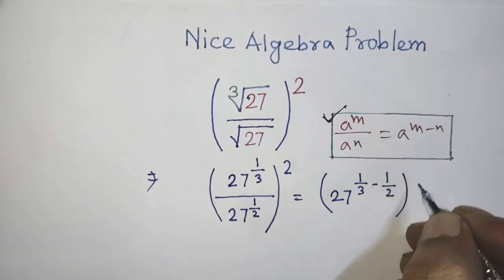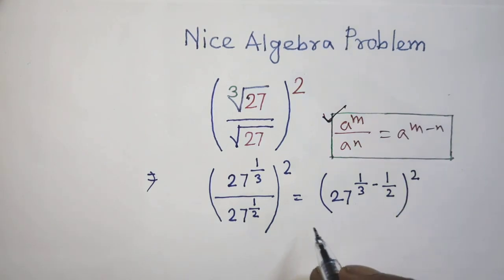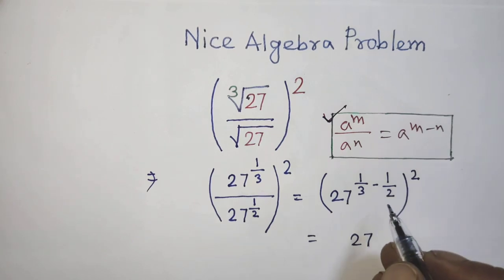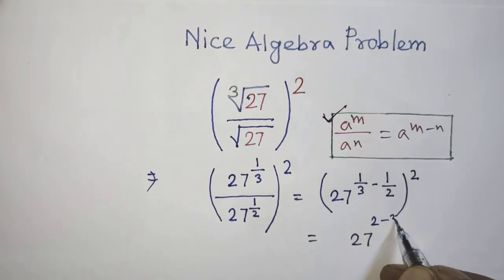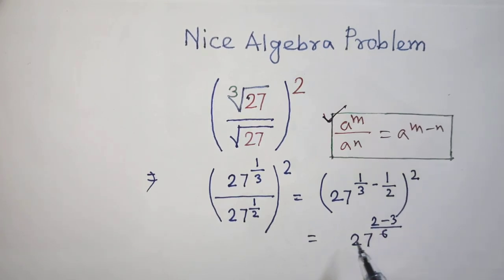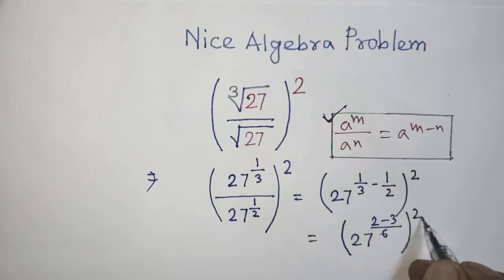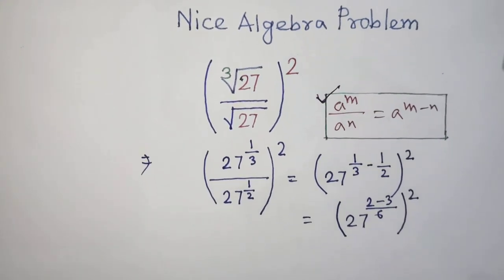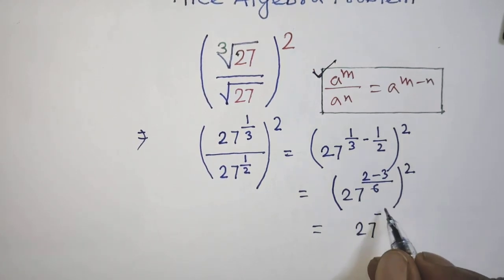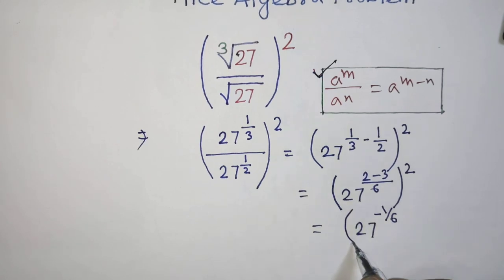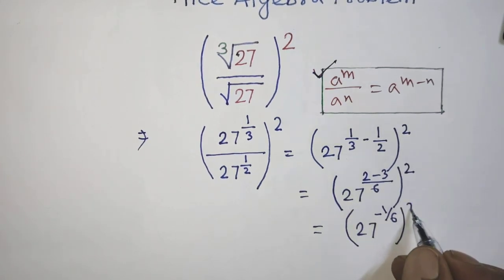Then it will be 27 to the power (2 minus 3) over 6, whole to the power 2. Then it will be 27 to the power minus 1 over 6, whole to the power 2.